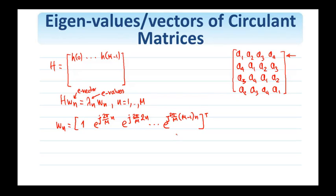And one should recognize right away that these are the basis vectors of the discrete Fourier transform, these complex exponentials. And the set of eigenvalues are simply the discrete Fourier transform values of the first row of the matrix.